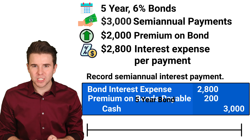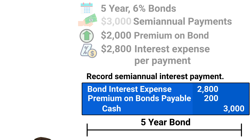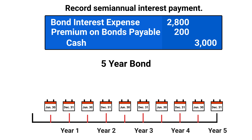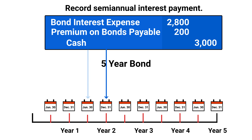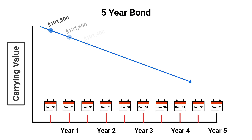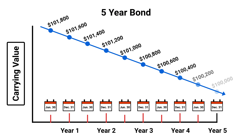This exact entry is made on the semi-annual interest payment dates of June 30th and December 31st for each of the 5 years of the bond's life. Recording each of these semi-annual entries reduces the unamortized premium and reduces the carrying value of the bonds.